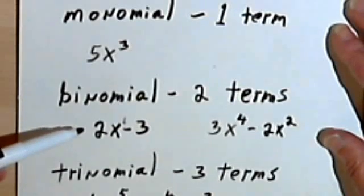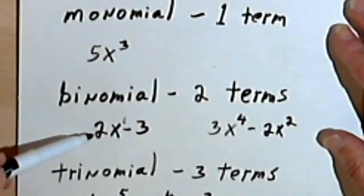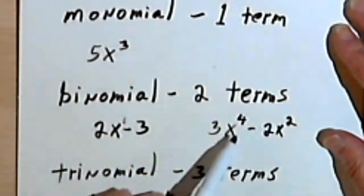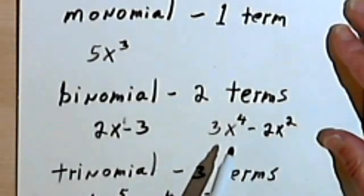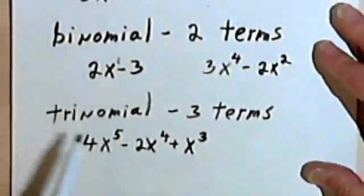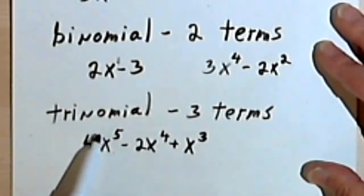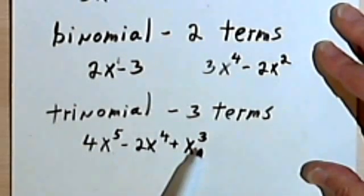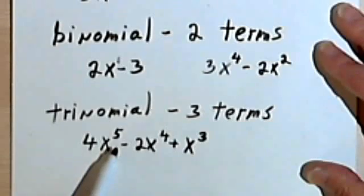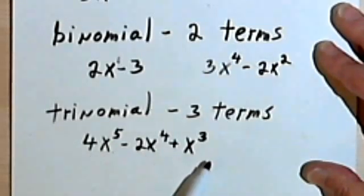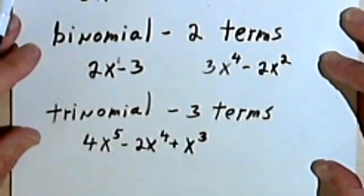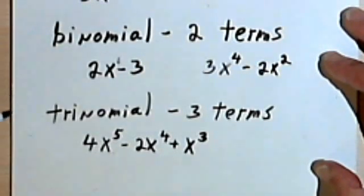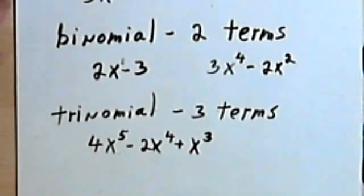If it's made up of two monomials, we call it a binomial, and we look at the largest exponent to find out what degree it is. If it's made up of three monomials, we call it a trinomial. And once again, we find the degree by looking at the largest exponent. If it's any more than three, then we're probably just going to call it a polynomial. We can still say what the degree is by looking at the largest exponent. And that's all there is to it.